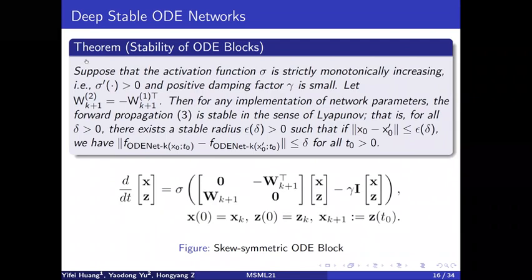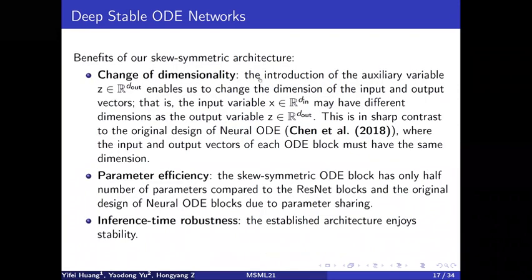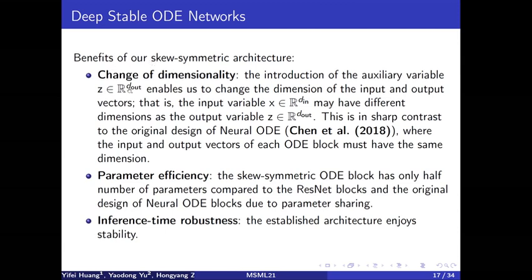There are some benefits of our skew-symmetric architecture. The first is a change in dimensionality: by introducing the intermediate variable Z, this is a sharp contrast to the original design which only has one variable X. The second benefit is parameter efficiency, as the skew-symmetric structure requires only half the number of parameters. The last benefit is time-invariant robustness, as the theorem holds regardless of whether it is training or test time.